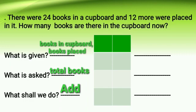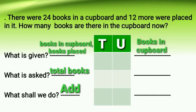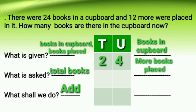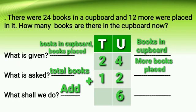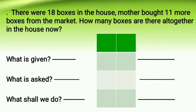Let us name the columns: tens column and units column. There are 24 books in the cupboard, so we will put 2 in the tens column and 4 in the units column. 12 more books are placed, so we will put 1 in the tens column and 2 in the units column. Let us add: 4 units plus 2 units is equal to 6 units. 2 tens plus 1 ten is equal to 3 tens. So we have 36 as the total number of books.